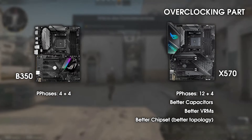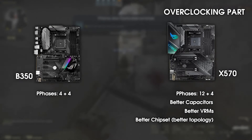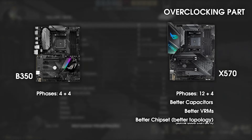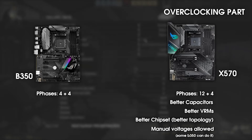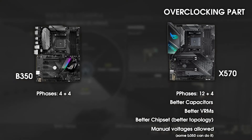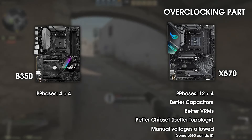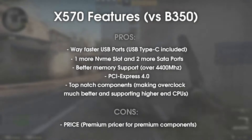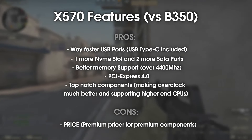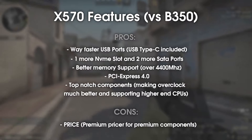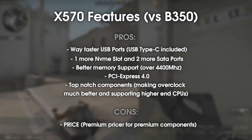The better chipset, made by AMD this time, allows overclocking the CPU and RAM further. RAM speeds can exceed 4000 MHz with proper kits — something simply not possible on B350. We also have the ability to select manual voltages instead of offset voltages, and a much better cooling system for VRMs, capacitors, and the chipset. Overall: better USB, more NVMe and SATA storage, PCIe 4, and top-notch components for overclocking.